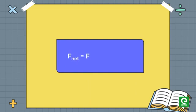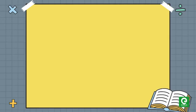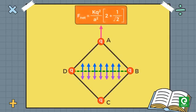will be F_AB plus F_AD plus F_AC equal to K times Q squared upon a squared times (2 plus 1 by root 2). This electrostatic force will be balanced by the force exerted by the soap film,